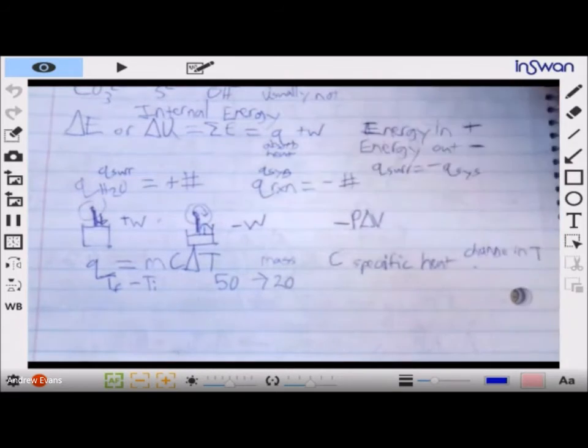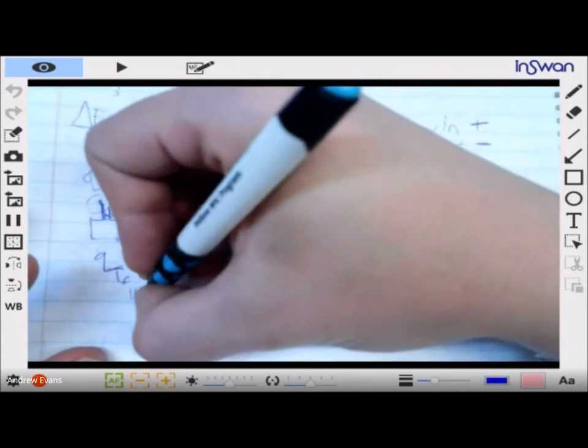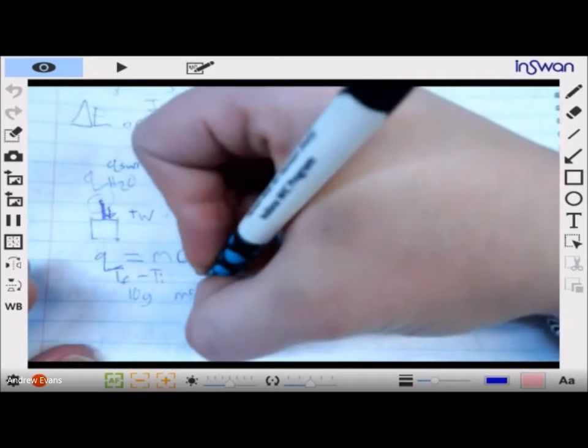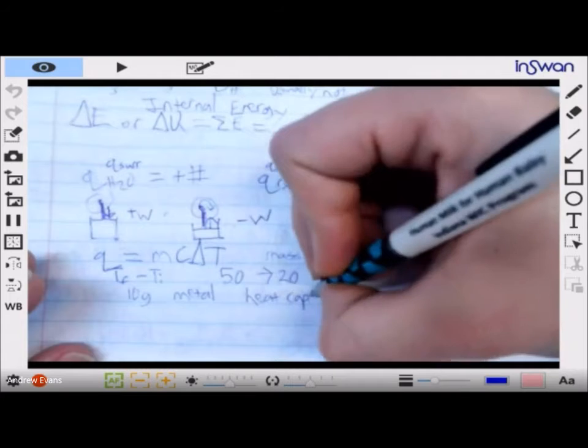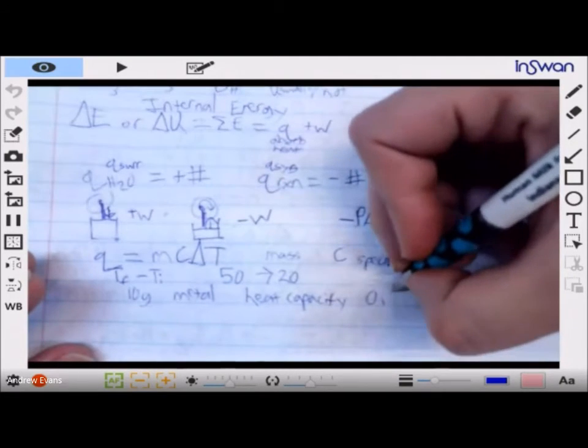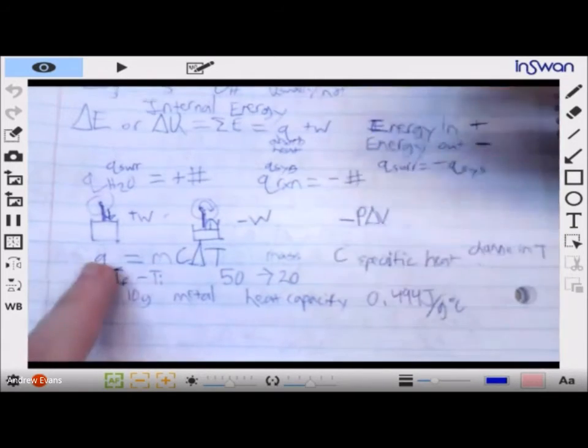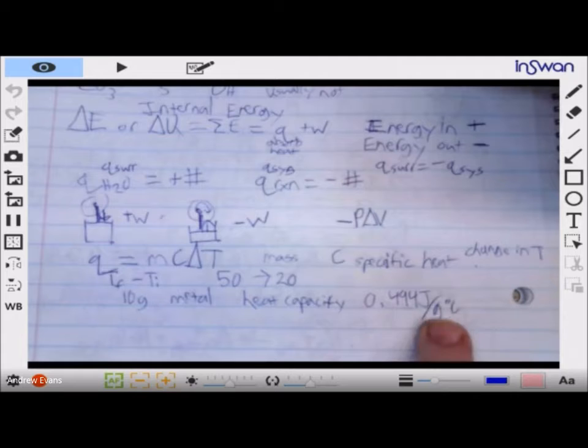How would we calculate that? If I took, say, 10 grams of metal with a heat capacity of 0.494 joules per gram degree C - do you have to memorize this equation? Not really, because of the units of heat capacity. The units of heat capacity tell us everything we need.